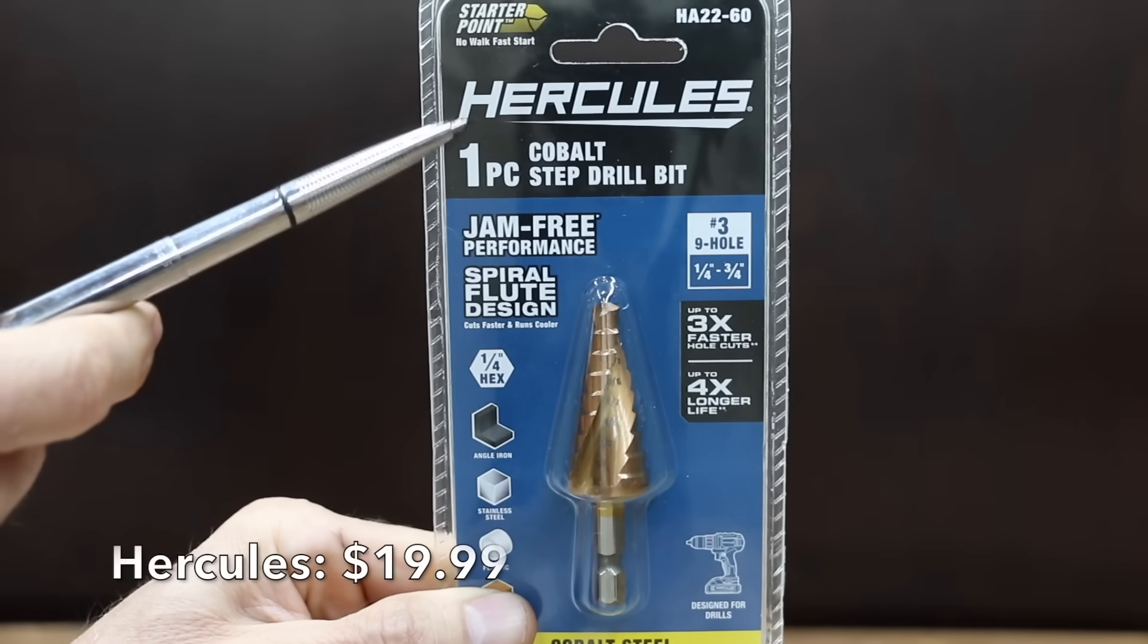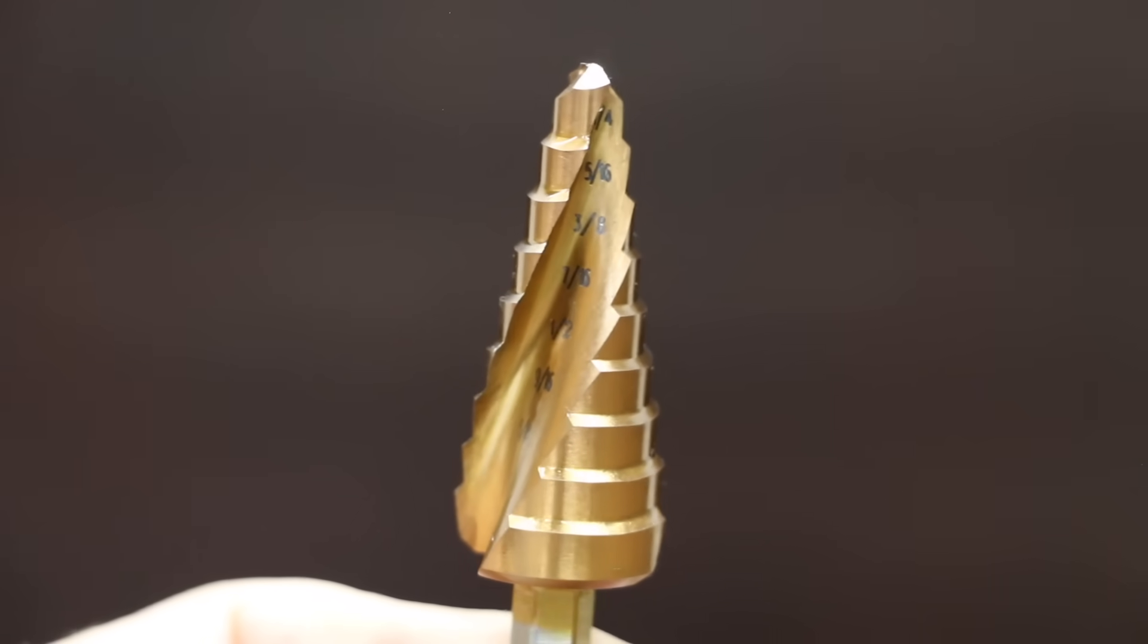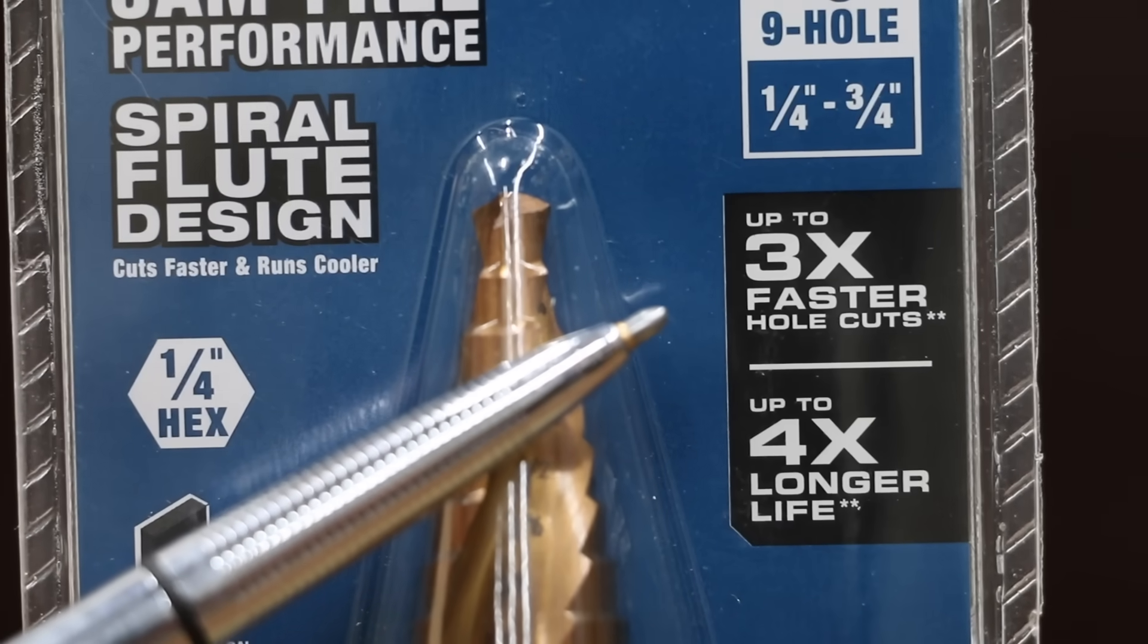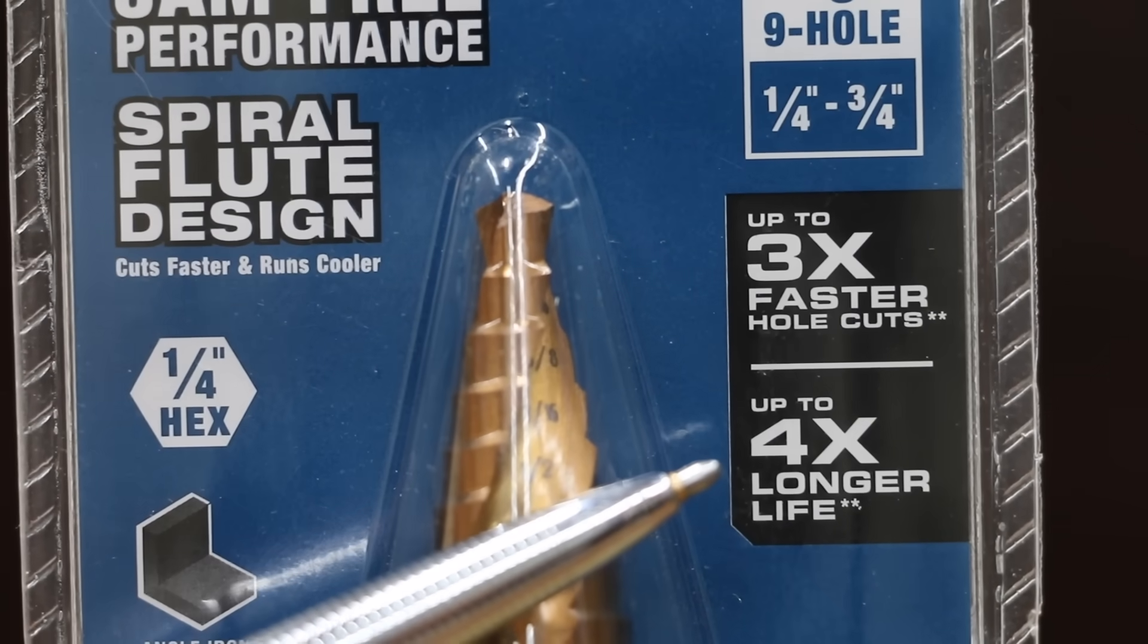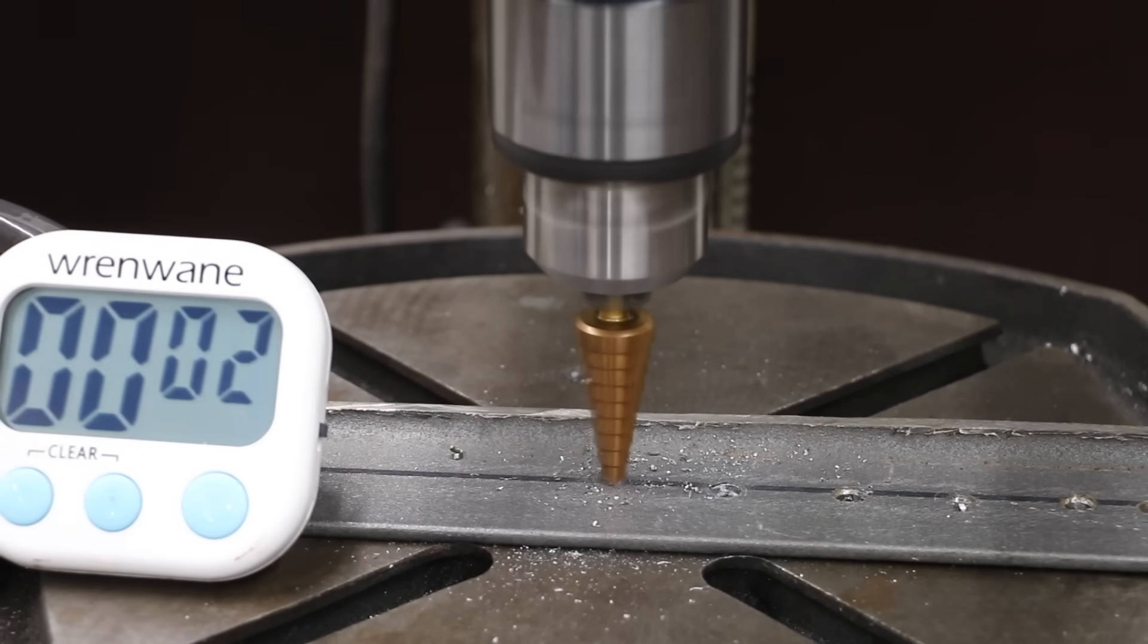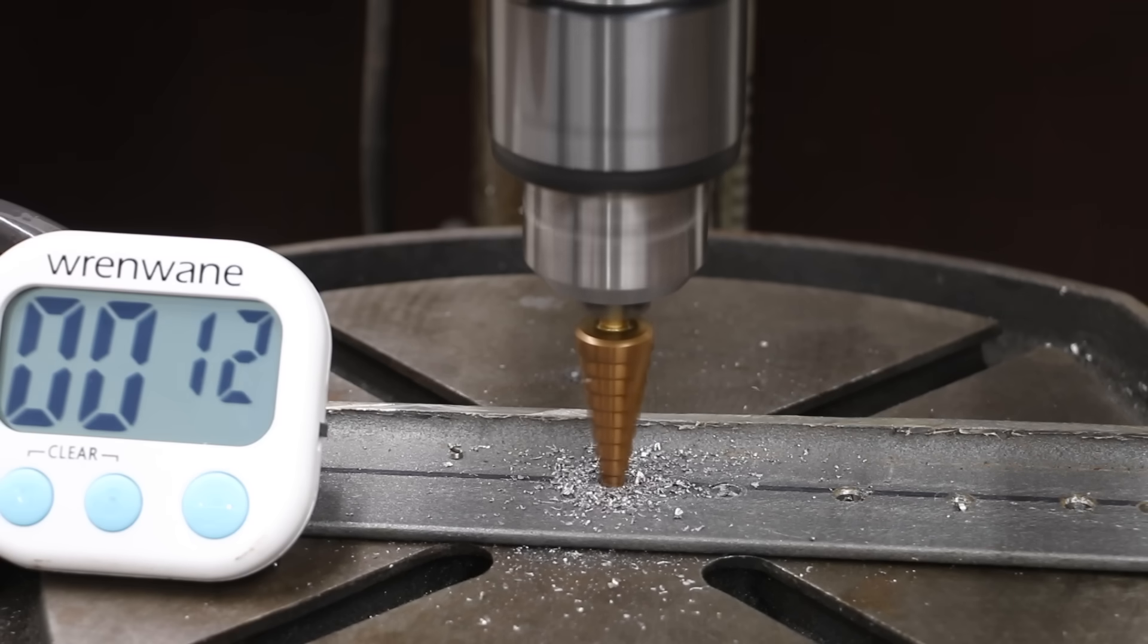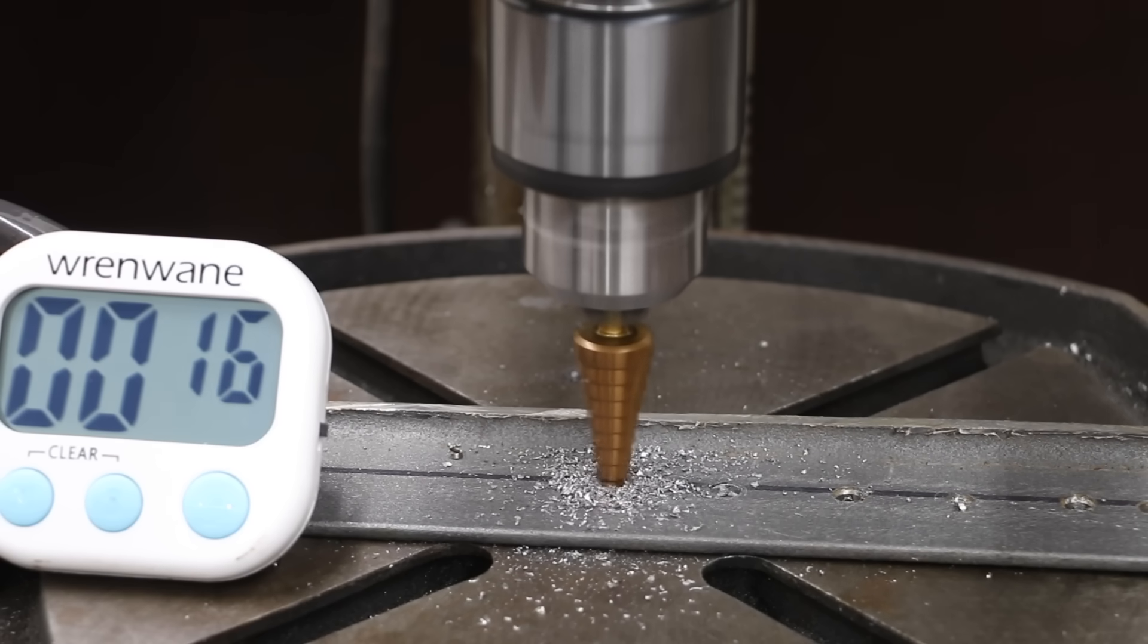At $19.99, the Hercules claims to contain Cobalt. Jam-free performance, spiral flute design, up to three times faster hole cuts, up to four times longer lasting. Made in China. The Hercules claims to be three times faster and the marketing seems to be accurate as it totally crushed the less expensive Step Bits with a 17 second time and takes the lead from Klein.